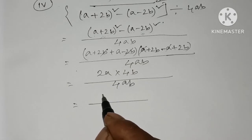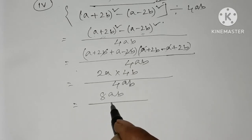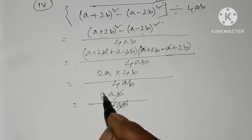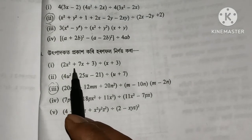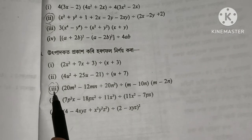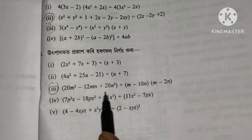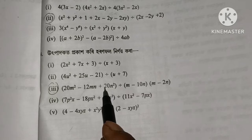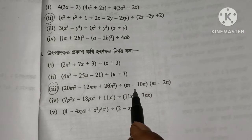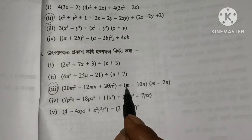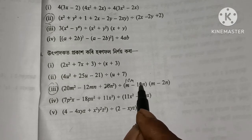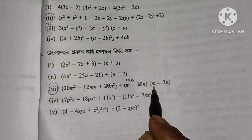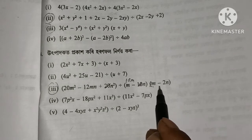So this gives 8ab, then subtract 4ab. So the answer is 4ab. Pay attention to the next problem with 3 examples.